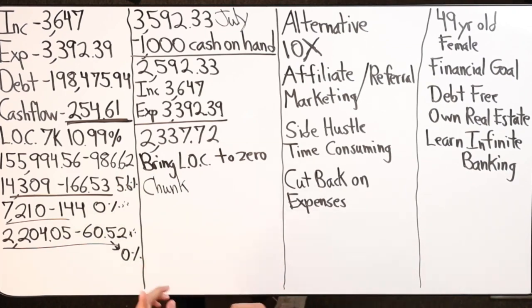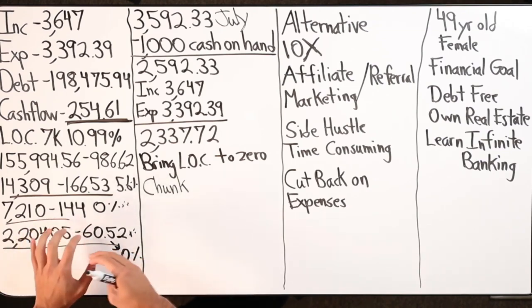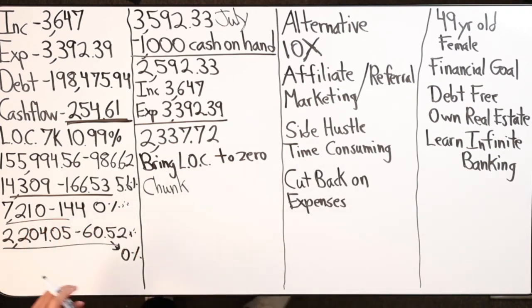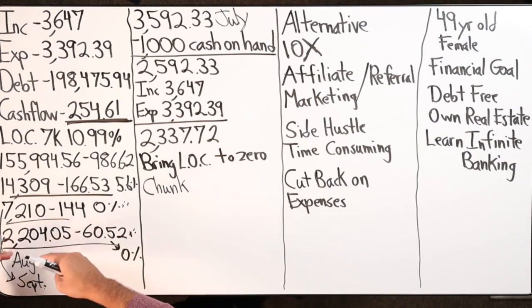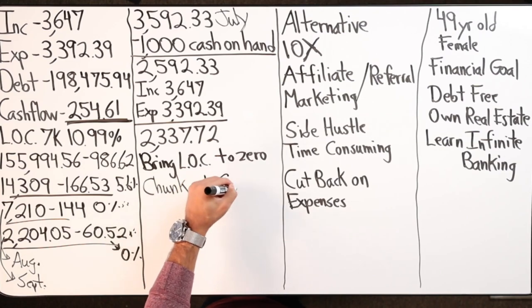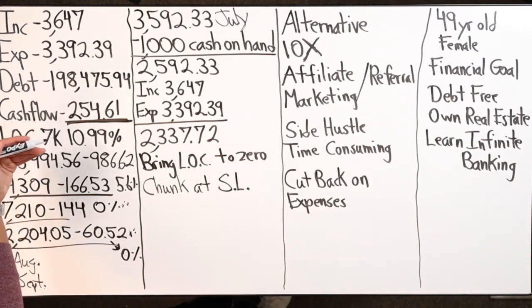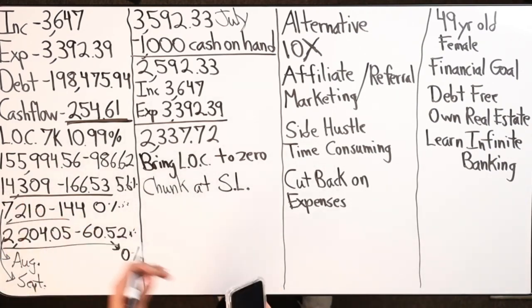Depending on these zero percent credit cards, if they expire soon, I'm going to want to wipe those out. But if not, if I have till 2020 August or September, we're not sure. If it was 2019, then obviously we would try to shift some of that debt over to the line of credit. If it's not expiring in 2019, we're going to leave it alone and chunk at the student loans. With only $7K, I'm going to want to do about maybe a third of the balance owed on the student loan.